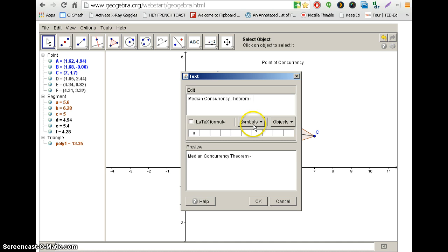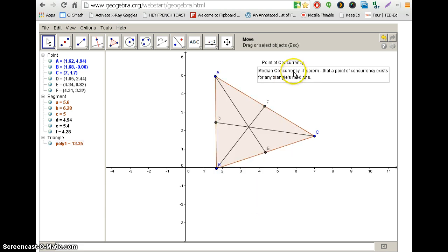Alright, let's write that out. And we're going to make this the median concurrency theorem, that a point of concurrency exists for any triangle's medians. And that's kind of a big deal, right?